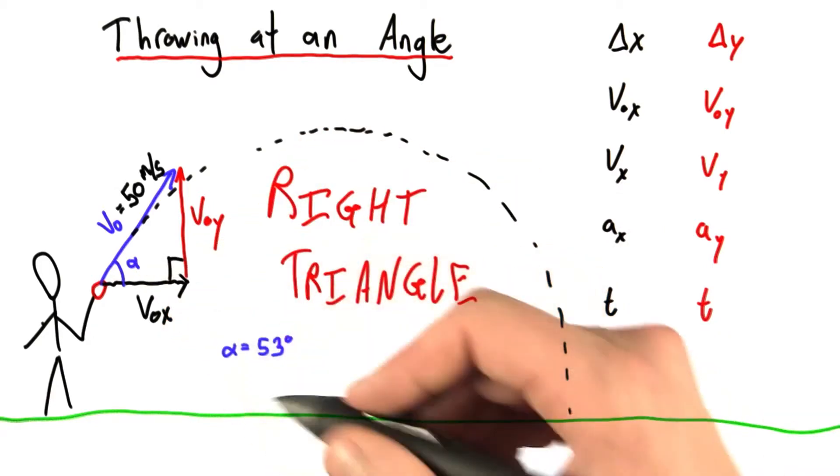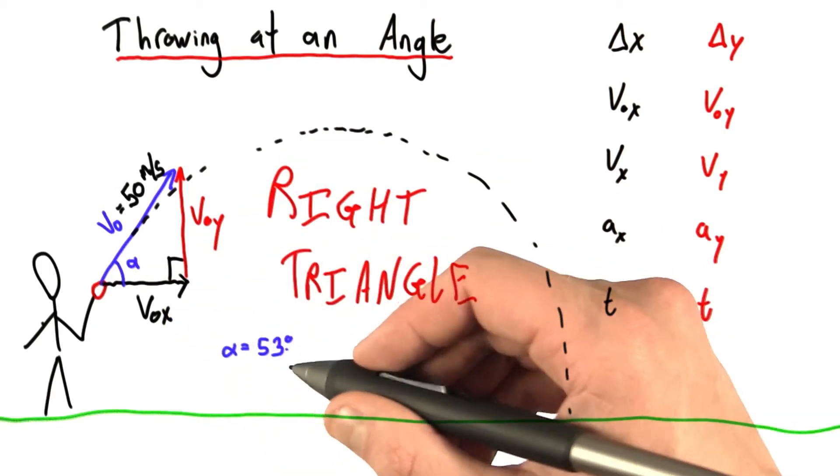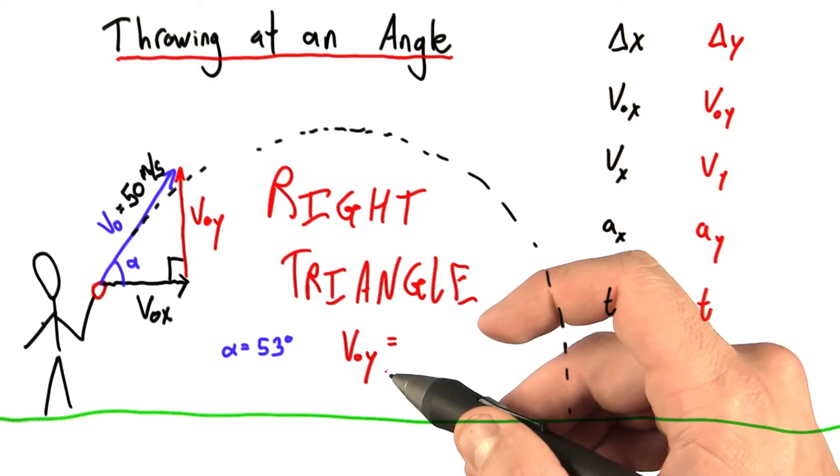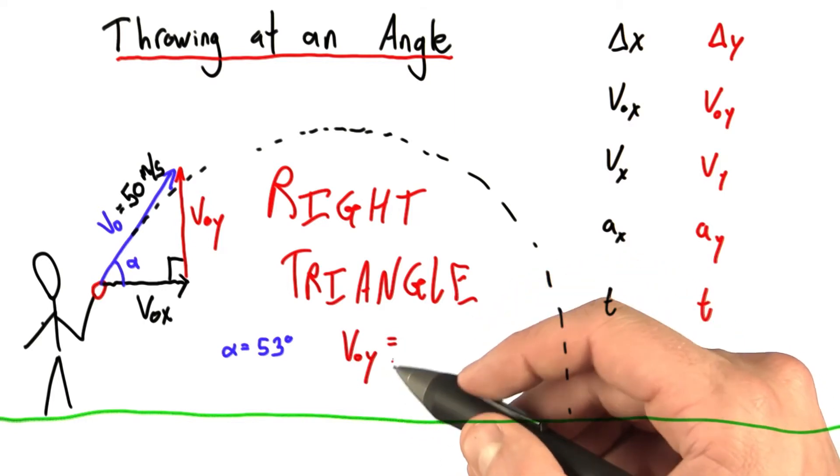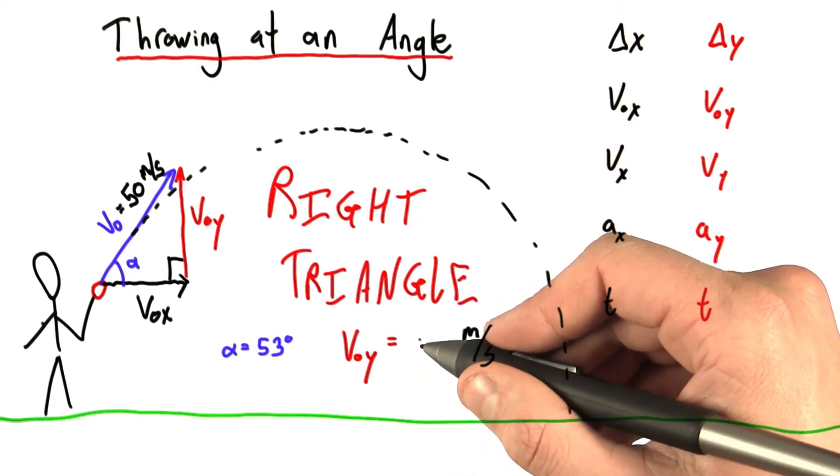Now if I call this angle alpha, and I tell you that alpha is equal to about 53 degrees, can you tell me what v0y equals? You might have to think back to the trigonometry from unit 1. Enter your answer here and round to the nearest whole number.